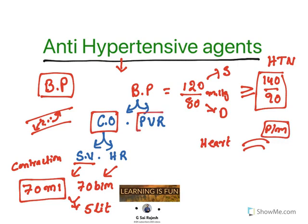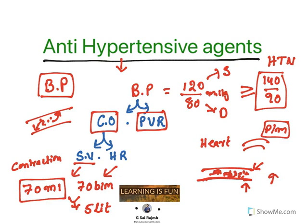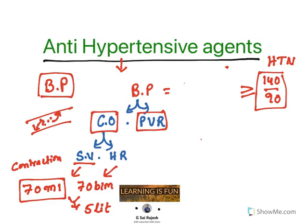Peripheral vascular resistance is the resistance offered by vascular tissue to blood flow inside the blood vessel. It is determined by the contractile ability of the blood vessel and the blood volume. If blood volume increases, resistance increases. Or if the blood vessel is not dilating properly during systole, peripheral vascular resistance increases. So blood pressure is determined by cardiac output and peripheral vascular resistance.